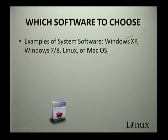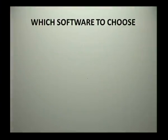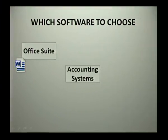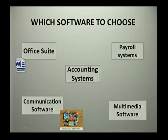Examples of operating systems include Windows XP, Windows 7 or 8, Linux, and the Mac operating system. For application software, there are many examples depending on the user. You can get an office suite, accounting systems, payroll systems, communication software, and multimedia software. There are many other options, but it depends on your needs — for example, if you work at a firm doing accounting, you would need accounting system software. It all depends on what you are using your computer for.